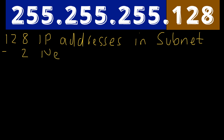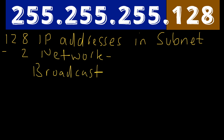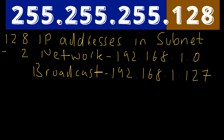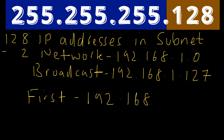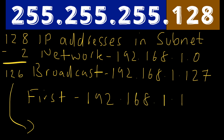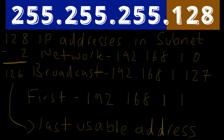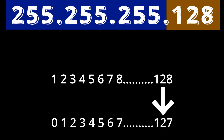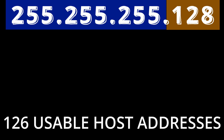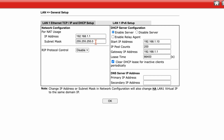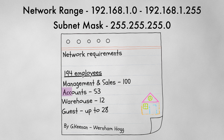We subtract two for the network and broadcast address. The network address is 192.168.1.0, the broadcast address is 192.168.1.127, the first usable address is 192.168.1.1, and the last usable address is 192.168.1.126. Counting 128 values from zero reaches 127, giving us 126 usable host addresses. I'll go to the router LAN settings and create a subnetwork with these details, allowing for 100 DHCP addresses. That's subnet one done.